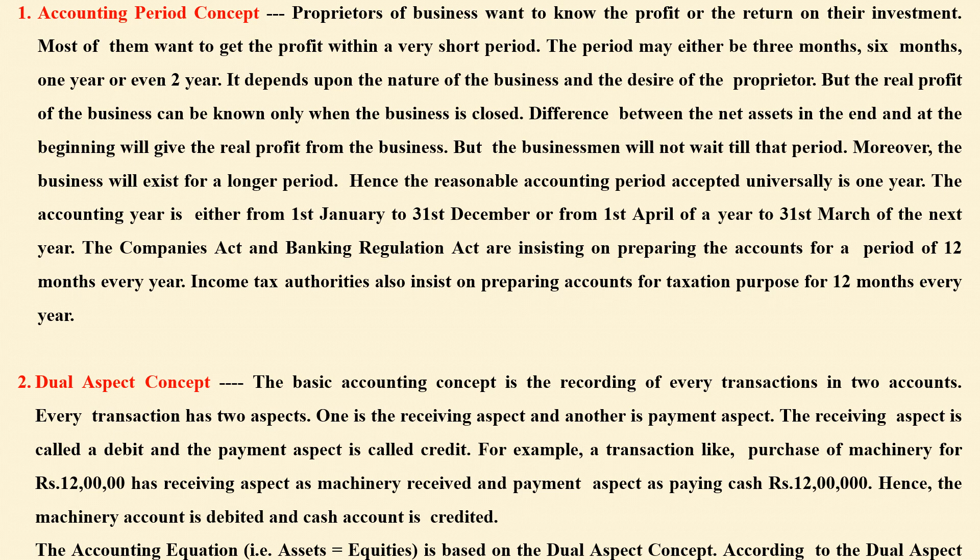In purchasing machinery for Rs. 12,000, the receiving aspect is machinery received and the payment aspect is paying cash of Rs. 12,000. Hence, the machinery account is debited and cash account is credited. The accounting equation is: assets equal to equities, that is liabilities. According to the dual aspect concept, the total debits will be equal to the total credits in the accounting period.